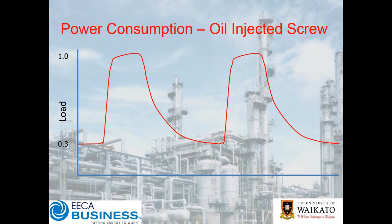We get quite an extra chunk of power in this part of the curve that's not actually producing any compressed air. Now if we have a very small or no receiver, the compressor can start up again before it has fully decayed, and so we can end up with rapid cycling — loading up, decaying, loading up again, decaying again, and so on.